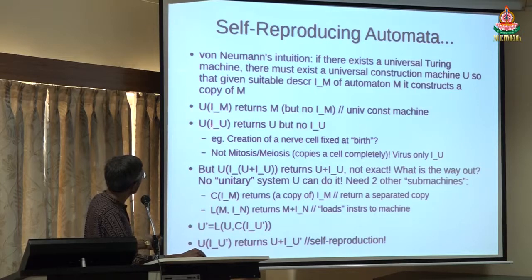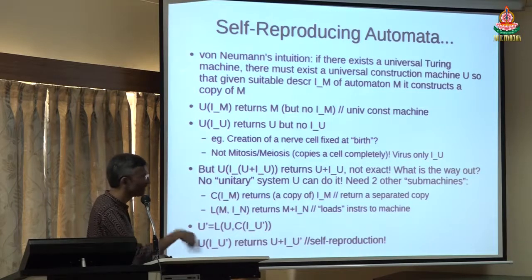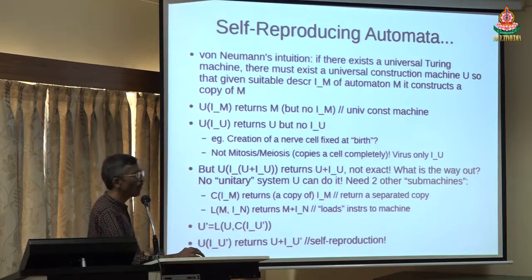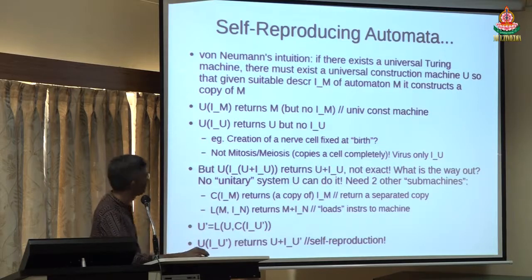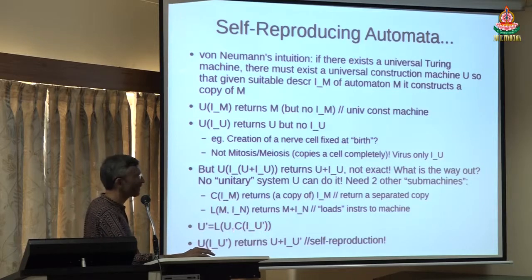Von Neumann thought that in addition to the instructions, you add something additional that essentially creates the ecosystem. But when you apply these combined instructions to U, it produces U plus U, still not the whole system. For it to be self-reproducing, it has to be a kind of fixed point — it has to reproduce the whole ecosystem also. Finally, von Neumann postulated a few other machines: a copy machine and a loading machine. You can then construct a composite machine that takes the instructions of the whole composite system, creates a copy, loads it onto the universal construction machine, and out comes the actual construction. This turns out to be a complete self-reproducing system.